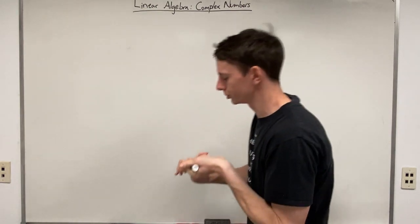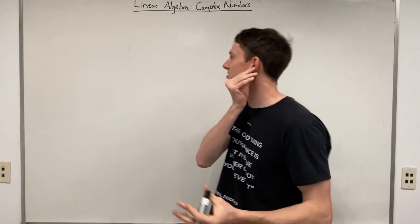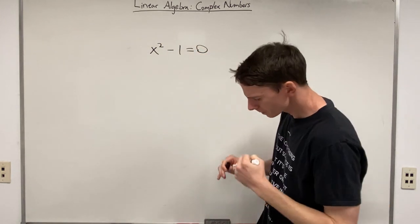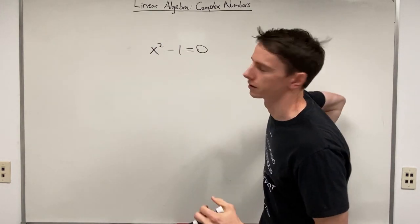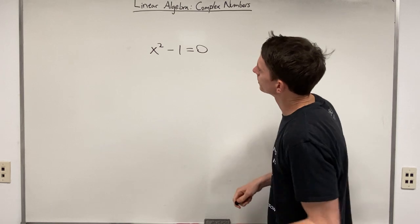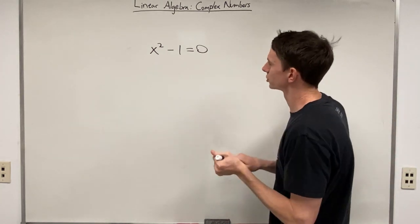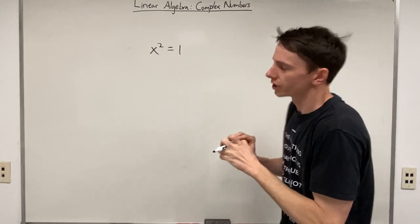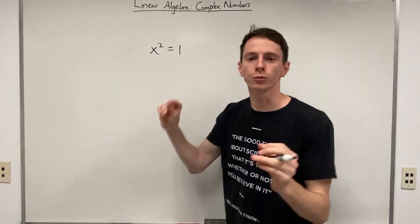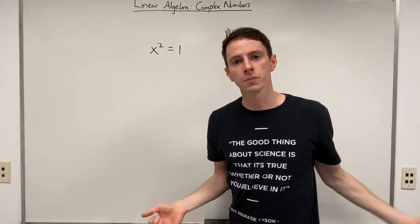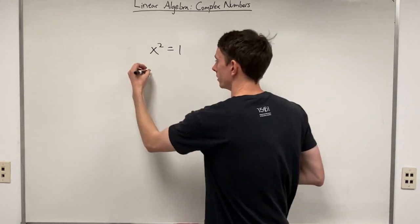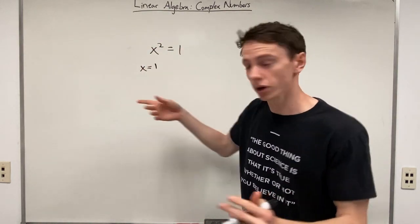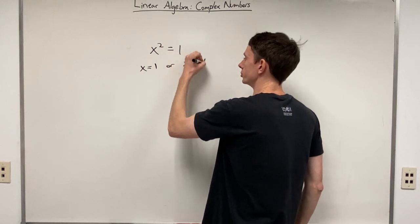What I want to first do is write down a simple equation on the board: x squared minus one equals zero. We might be interested in solving for x. This is just algebra — we add one to the other side, getting x squared equals one. We ask: what number, when squared, equals one? We know one times one equals one, so x equals one. But negative one times negative one is also one, so x can equal one or negative one.